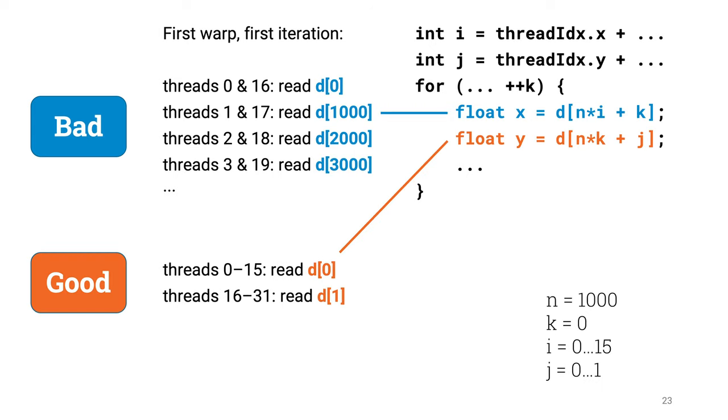Note that the second memory read is much better. Here j is 0 or 1, so we will just read two memory locations, and they are next to each other. And something similar happens in each iteration. Here k is 1, the first memory read is all over the place. The second memory read is good. And k equals 2, the same story. And it doesn't matter which warp you look at, something similar happens for each warp.